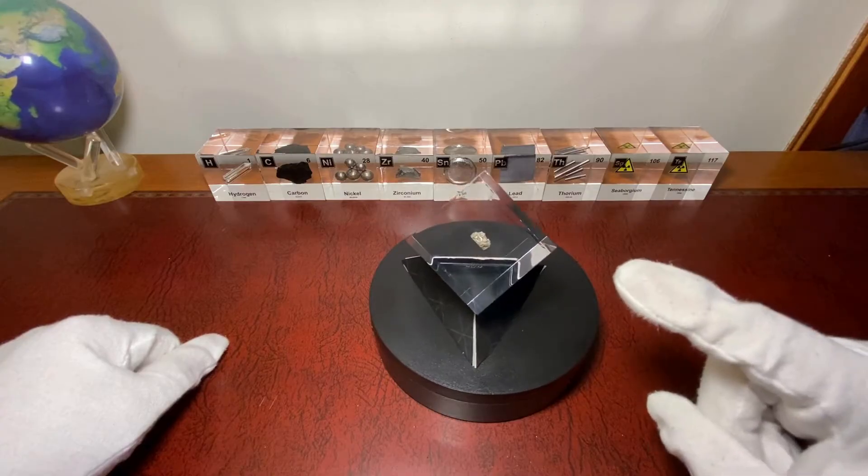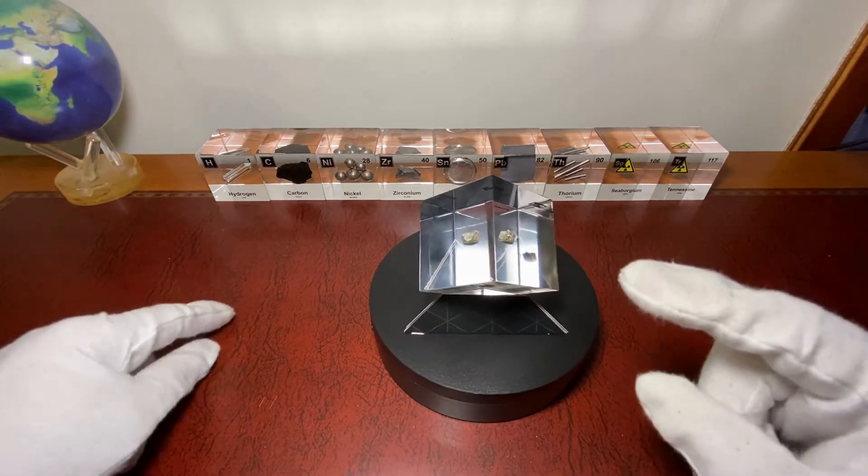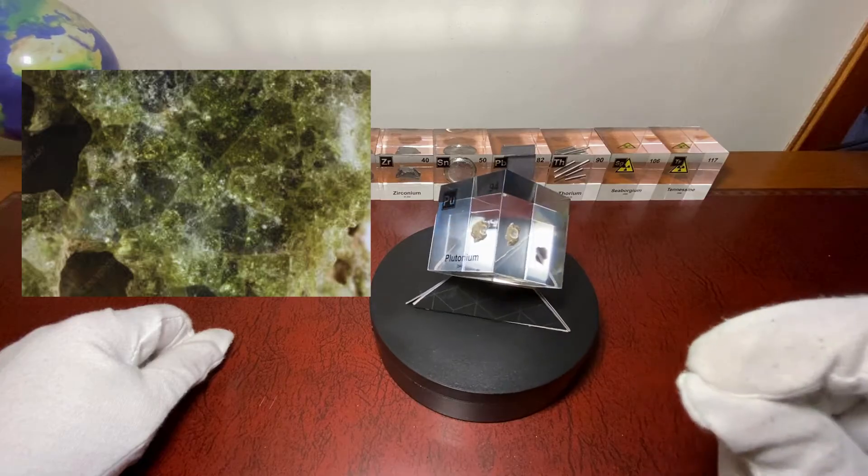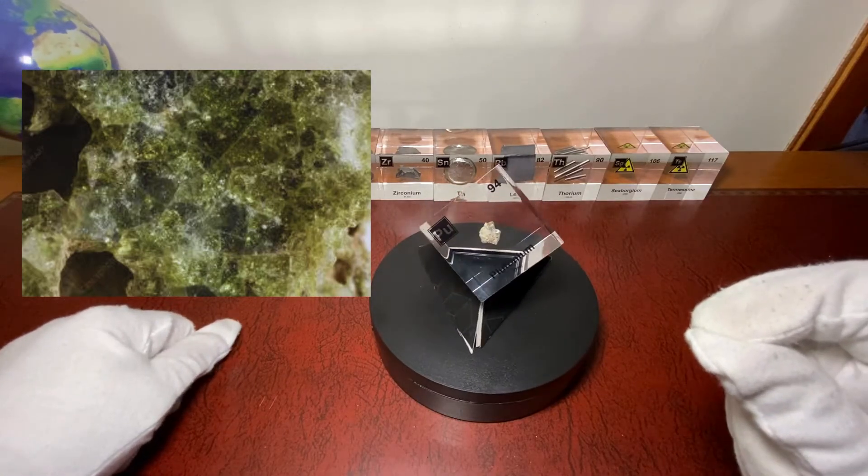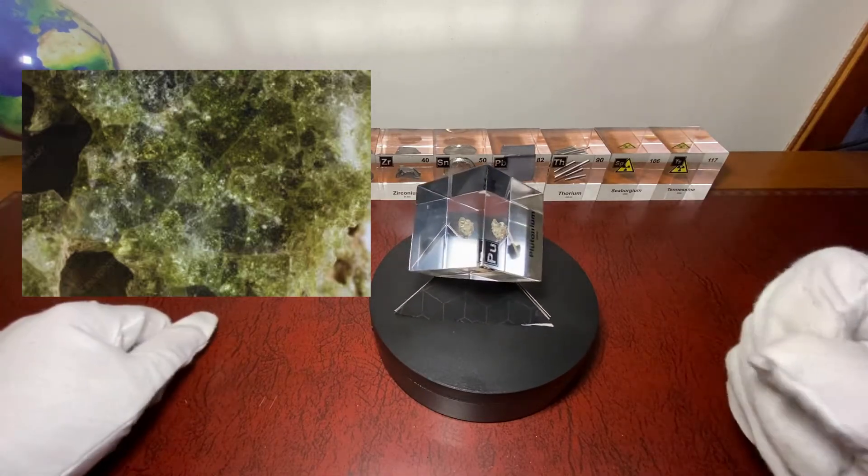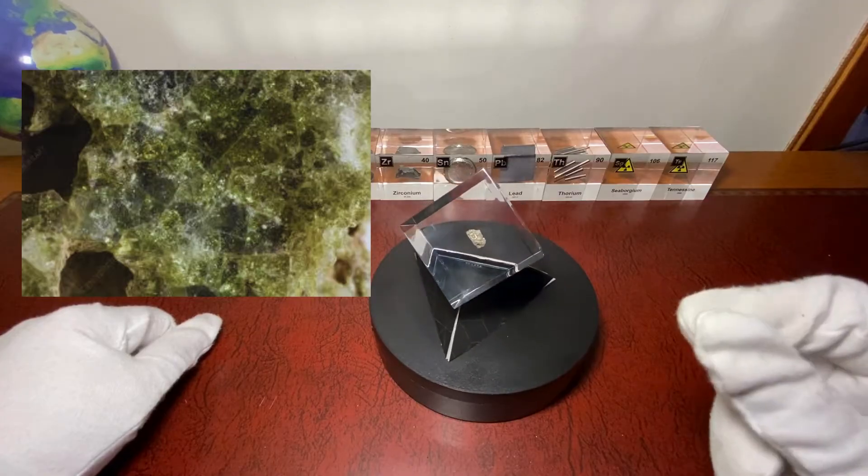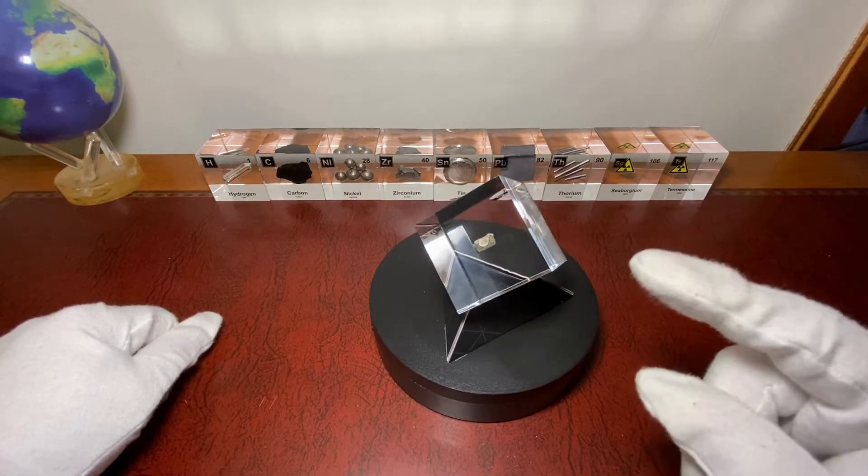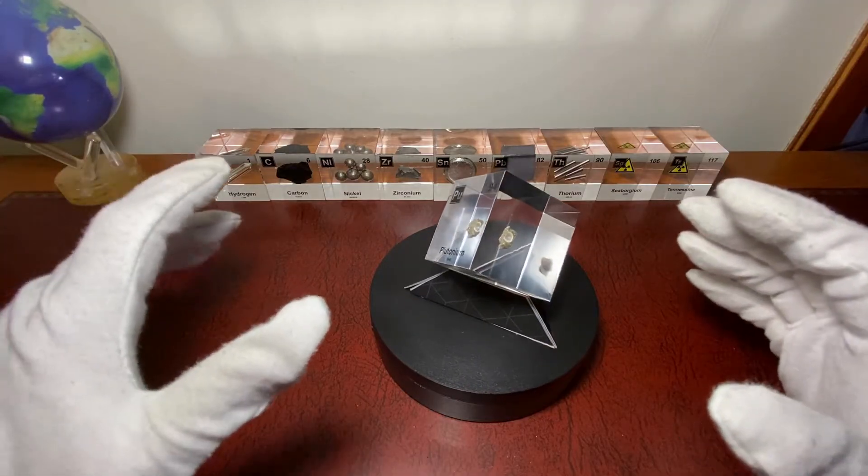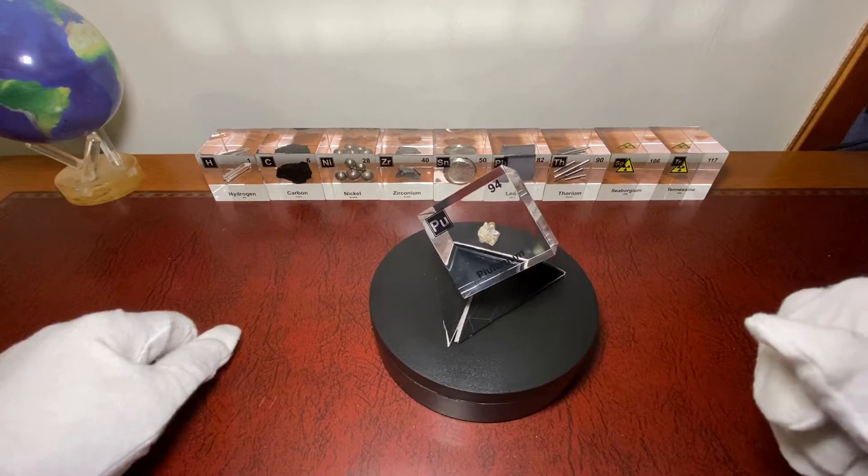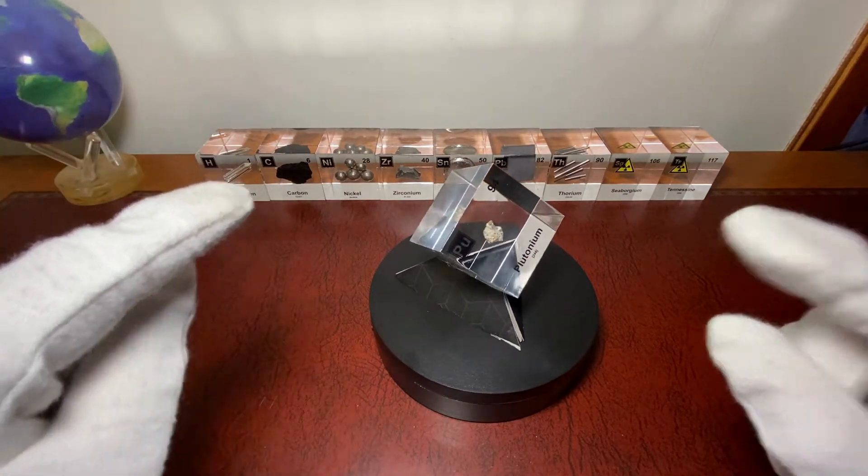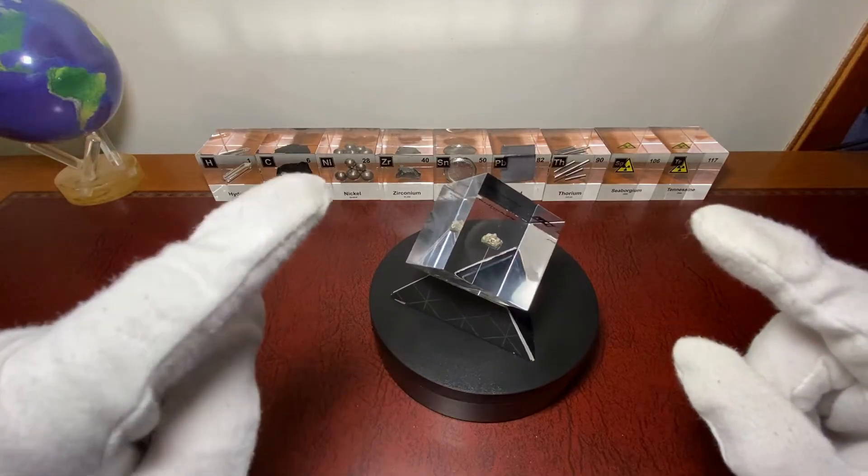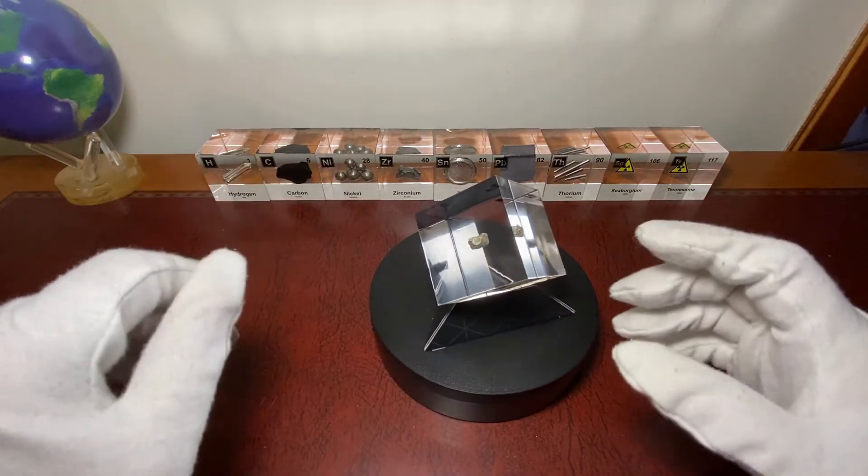In this acrylic cube is trinitite, a mineral that was formed after the first man-made atomic explosion at Alamogordo during the Manhattan Project in 1945. Not all plutonium exploded in the first test. Particles that did not explode melted together with the sand that was blown up during the test, resulting in the fallout of the silicon from the sand and the plutonium, causing this kind of greenish glass rocky substance.